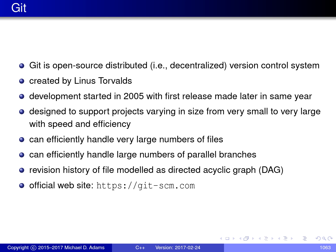Git was designed to support projects that vary in size from very small to very large. Due to its speed and efficiency, it can handle very large projects, but it also works very well with small projects. It can handle projects with very large numbers of files and also very large numbers of parallel branches. In Git, the revision history of files is modeled using a directed acyclic graph, also known as a DAG, which I'll talk about a little bit later. The official website for Git is listed at the bottom of the slide.